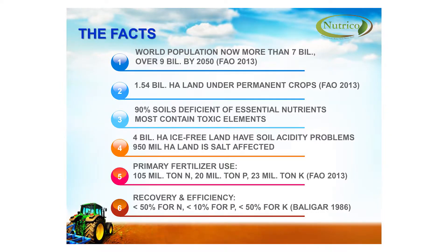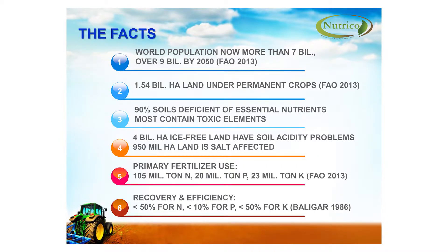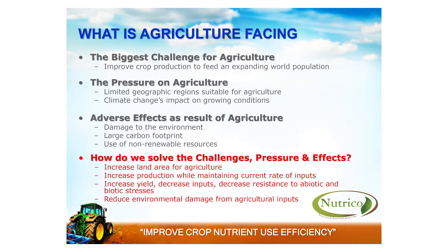Primary fertilizer use, as you can see, is not sustainable. There is a huge quantity of nitrogen, phosphates, and potassium used, and it is, in most cases, non-renewable resources. The recovery statistics show us that the use of primary fertilizers could not be environmentally friendly.